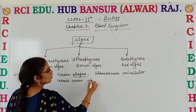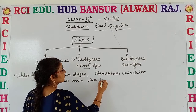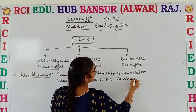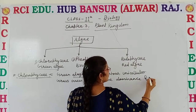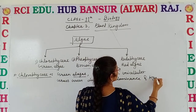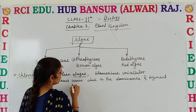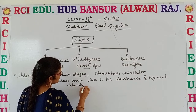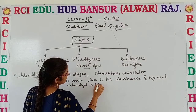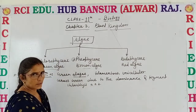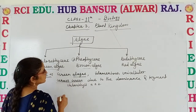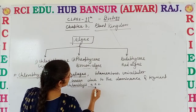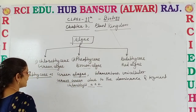They are grass green due to the dominancy of the pigments Chlorophyll A and B. This algae is grass green, and that is due to the presence of these pigments, Chlorophyll A and B.